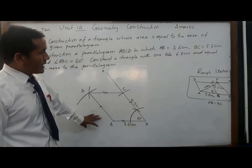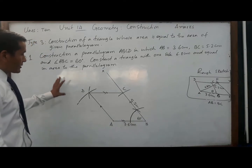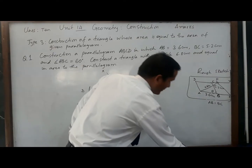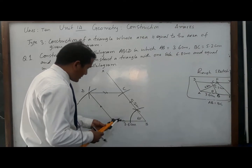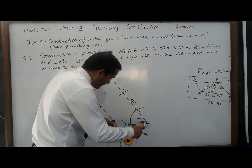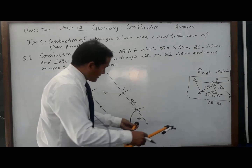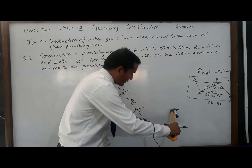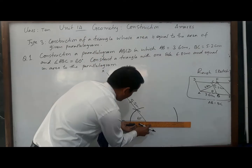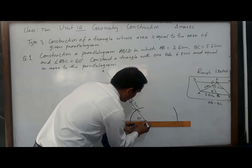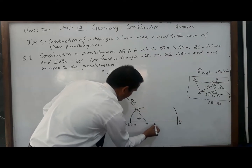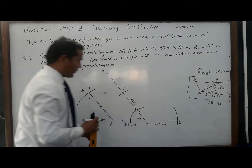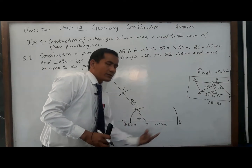After constructing the parallelogram, we have to construct a triangle whose area equals the area of the parallelogram. For this, we have to produce line AB to E such that AB and BE are equal to each other. Measure AB with the help of a compass — taking B as center, radius is 3.6 centimeters — draw an arc to produce AB to E. Give the name E. Remember AB and BE must be equal to each other.